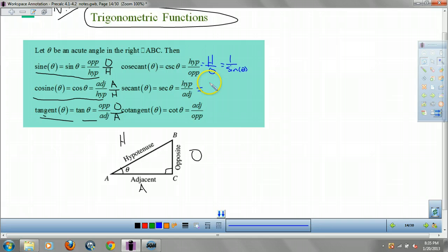Secant then is going to be hypotenuse over adjacent. That's 1 over cosine. Be careful guys, notice that these don't match up. Cosecant match up with sine. Not sine and secant. Sine and secant do not match up. And cotangent, well that's adjacent over opposite. It's 1 over tan. Keep this stuff in mind.